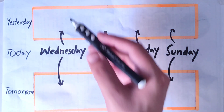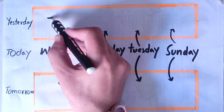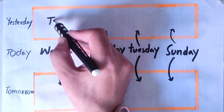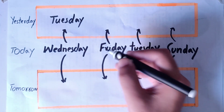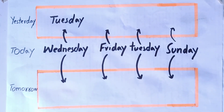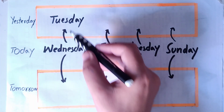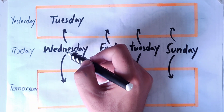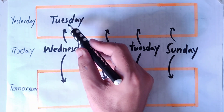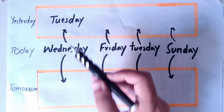Suppose today is Wednesday. So yesterday was Tuesday. Here I will write Tuesday. Today is Wednesday, so yesterday was Tuesday. And tomorrow is...